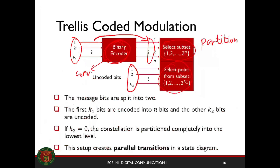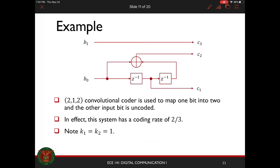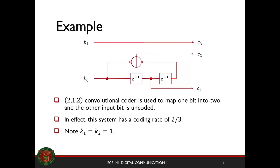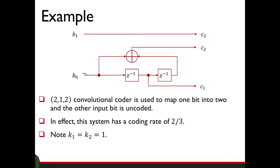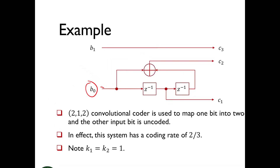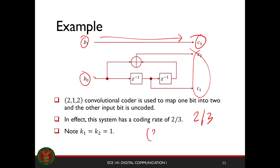Because of this, you create parallel transitions in your state diagram. Let's have an example to illustrate that. In this example, we have a 2-1-2 convolutional coder that encodes the least significant bit and converts it into two bits. The other bit is used directly. Effectively, you have a 2/3 rate convolutional code — basically a 3-2-2 convolutional code.